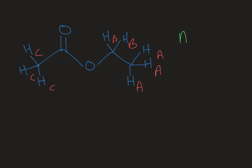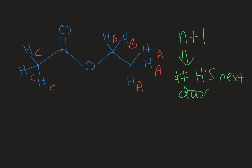In the N plus 1 rule, N is the number of protons on the next-door neighboring carbon atom. We can predict whether or not there's going to be splitting based on if and how many neighbors there are next door.